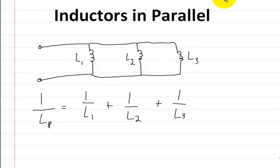This video is on inductors in parallel. Here I wrote out a circuit of three inductors in parallel. The formula to add these three up is the reciprocal formula: 1 over Lp, which is the inductance in parallel, equals 1 over L1 plus 1 over L2 plus 1 over L3. This is the formula you would use to add up these three inductors.